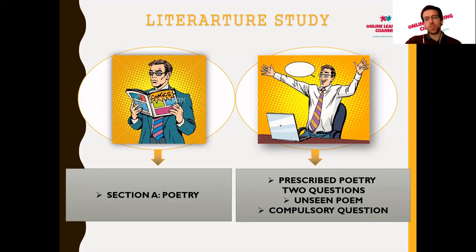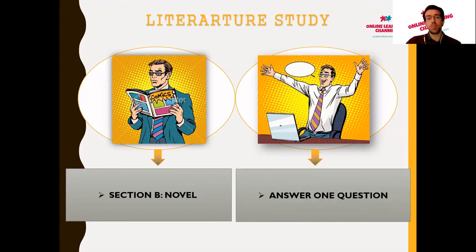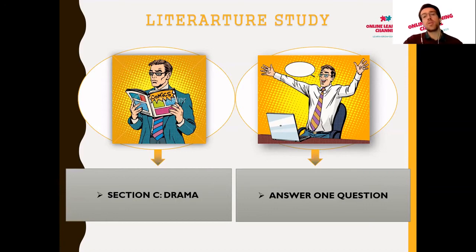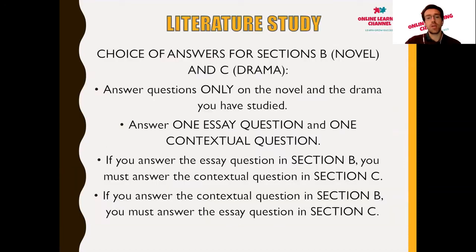There are two questions in Section A — one is an unseen poem and the other is a compulsory poem. You will have quite a variety of choice when it comes to not only the compulsory question but the unseen poem as well. For Section B, the novel or literature piece, you need to answer one question, and you'll be given some choice. Section C, the drama piece, also requires only one question based on the variety of choices available.